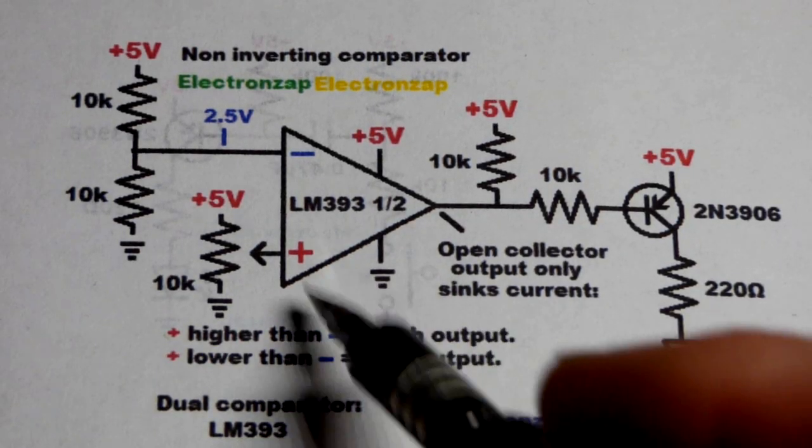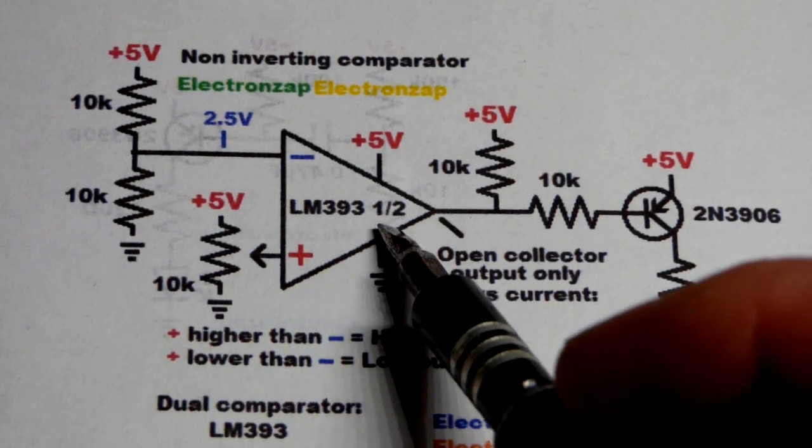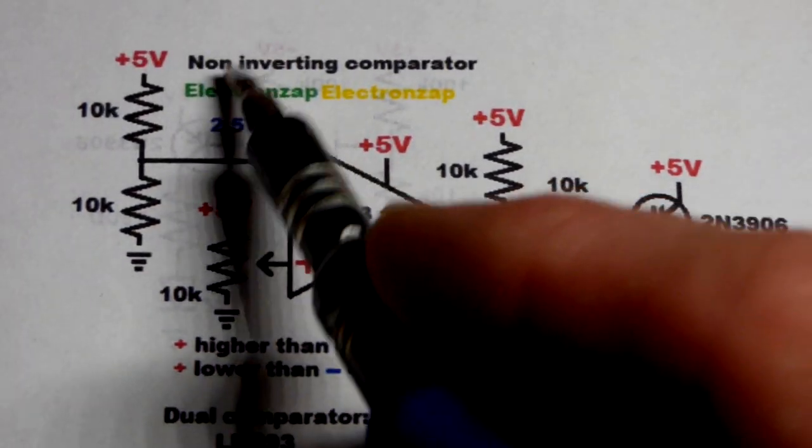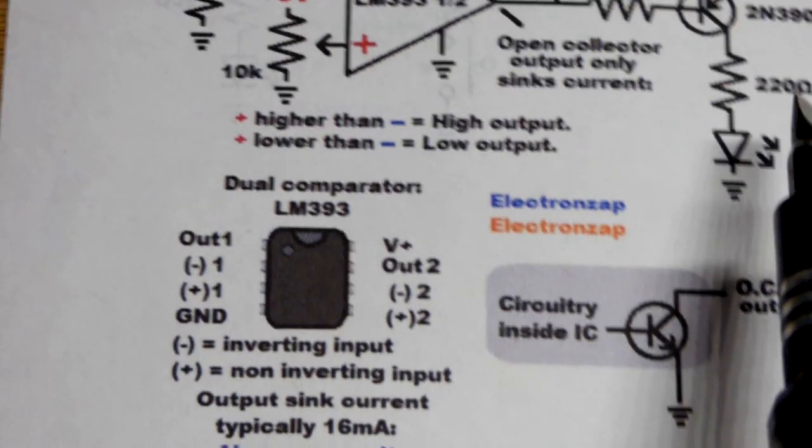So now we're going to take a quick look at the LM393 integrated circuit. There's two comparators. We're only going to use one out of two, and we're going to wire it up as a non-inverting comparator.